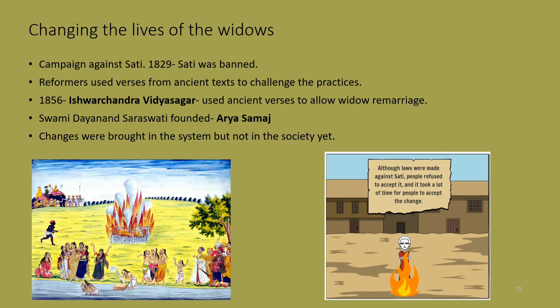Ishwar Chandra Vidyasagar was another reformer who used ancient texts to suggest that widows could remarry, and in 1856 widow remarriage was permitted. Swami Dayananda Saraswati founded a reform association called the Arya Samaj. However, all the laws were made but reality still remained different — many women were shunned because they chose to remarry, and others did not opt voluntarily to remarry due to pressure in society.